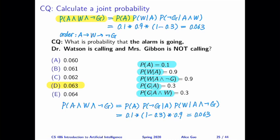So prior probability of A first, then the second one is W, so conditional probability of W given A, then the conditional probability of not G given A and W. Now we need to plug in numbers.